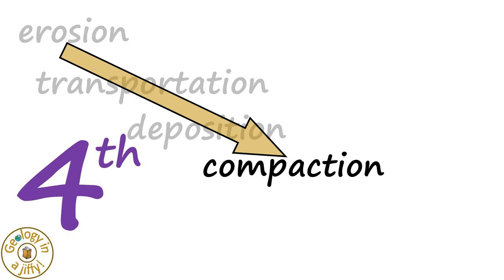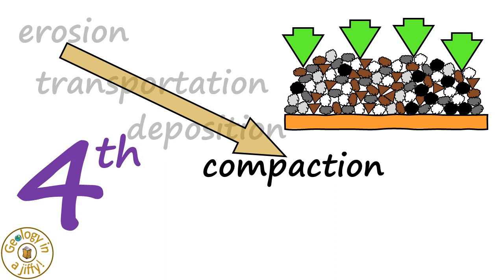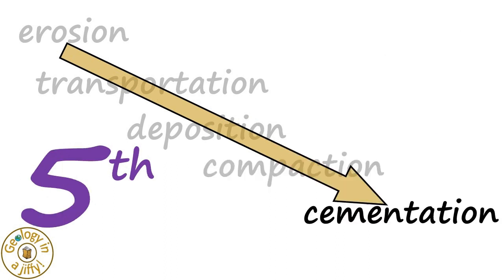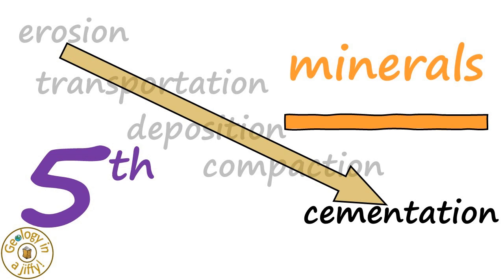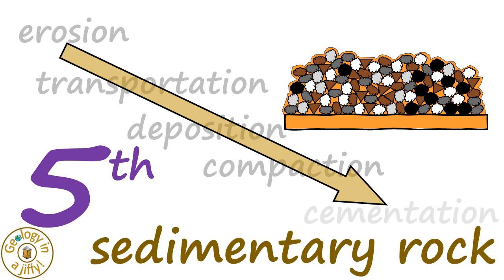The fourth stage is compaction, where the layers of loosely packed sediments are squashed by the weight of overlying layers. The final stage of cementation involves minerals that are dissolved in water as it travels through the sediments, then crystallising, cementing the sediments together, making sedimentary rock.